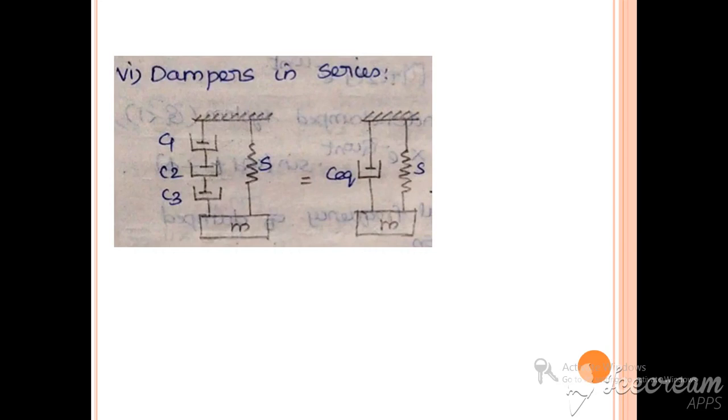When springs are connected in parallel, the equivalent spring stiffness can be calculated using the formula: S_equivalent = S1 + S2.